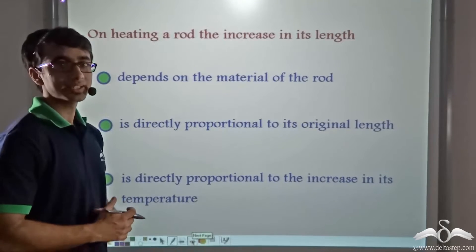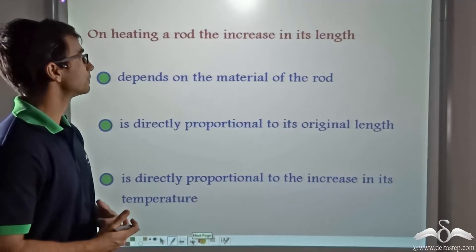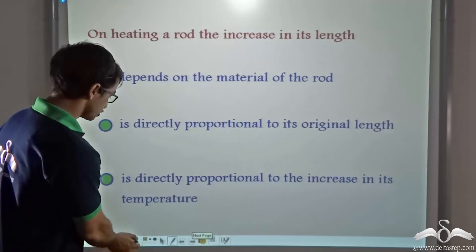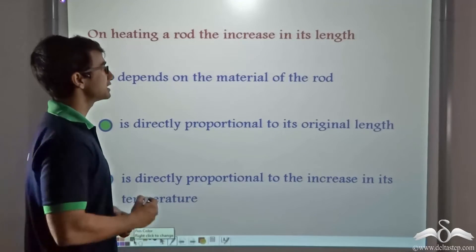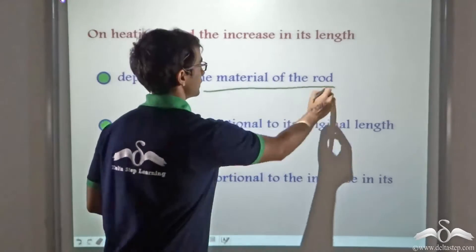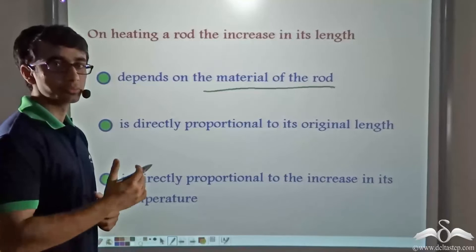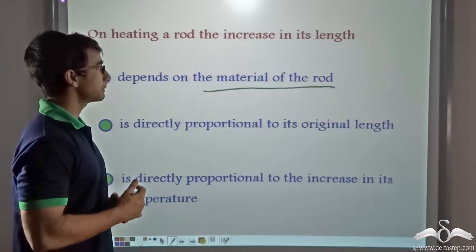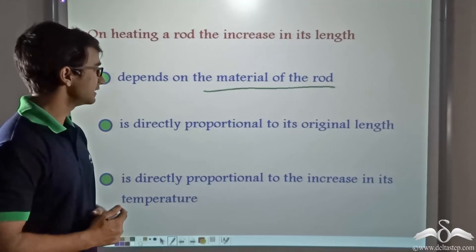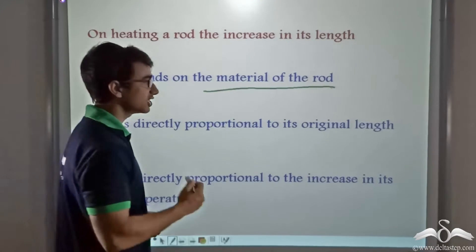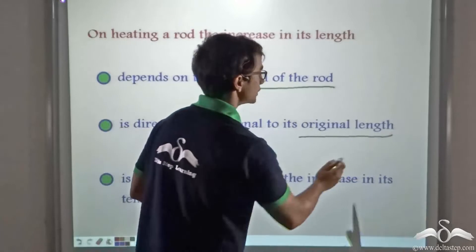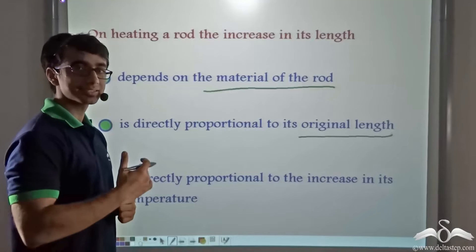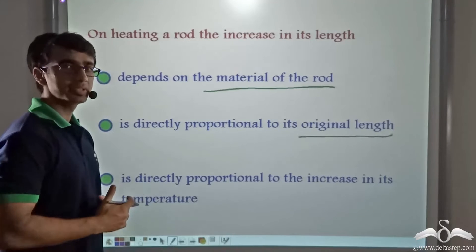Thus, when a solid body — in this case a rod — is expanding, the increase in length depends upon three factors. First, it depends upon the material of the rod, as iron and aluminium of the same length supplied the same heat energy were not expanding similarly. Second, it is directly proportional to the original length — greater the initial length, more will be the expansion; lesser the initial length, less will be the expansion.